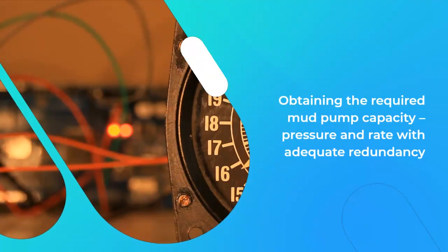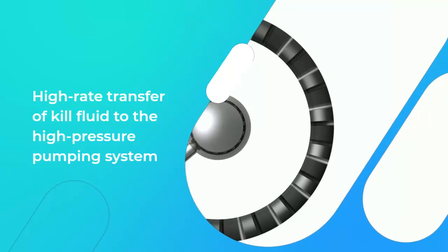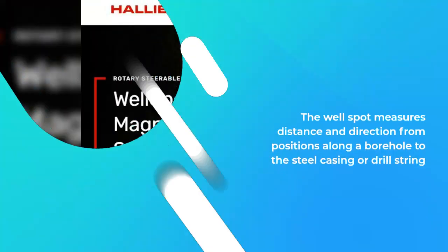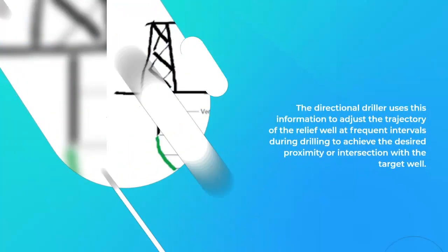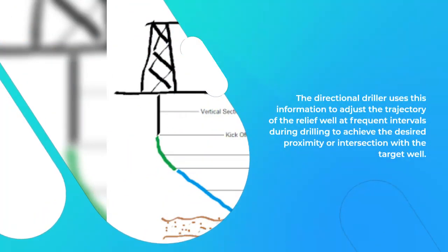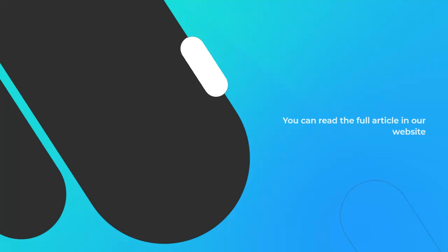Obtain the required mud pump capacity, pressure, and rate with adequate redundancy, along with high-rate transfer of kill fluid to the high-pressure pumping system. The well spot measures distance and direction from positions along a borehole to the steel casing or drill string in a second borehole. The directional driller uses this information to adjust the trajectory of the relief well at frequent intervals during drilling to achieve the desired proximity or intersection with the target well.